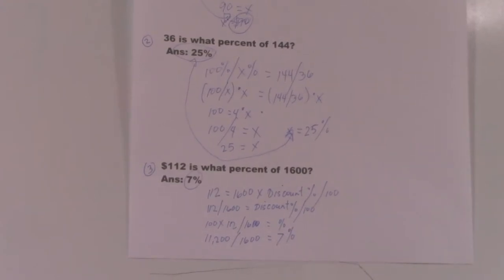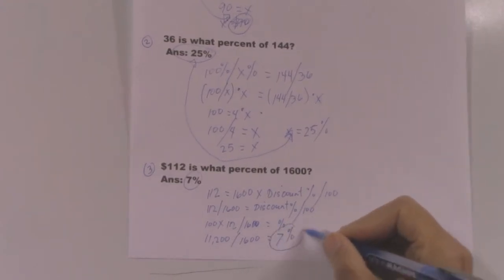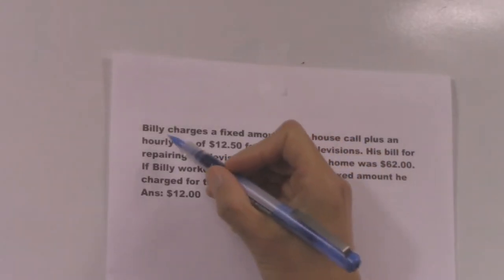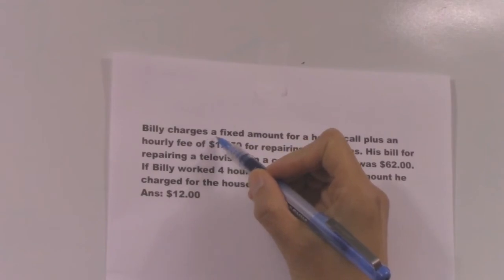It's equal to the unknown percent. So 11,200 divided by 1600 equals the unknown percent, which equals 7%. That's how you get the answer of 7%.